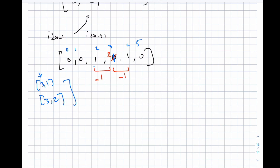Checking just the left and right neighbors is O(1) per query, so the total time complexity is O(q), which is linear. Since q is up to 10^5 this solution will pass comfortably.